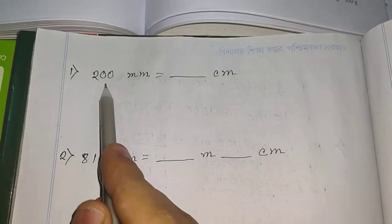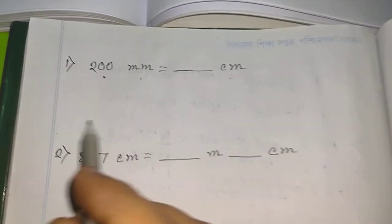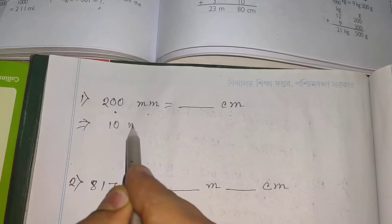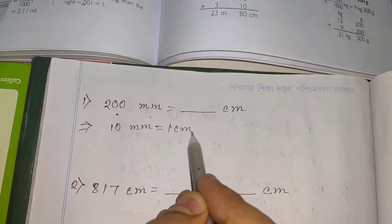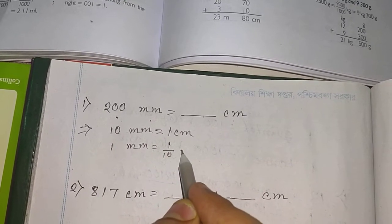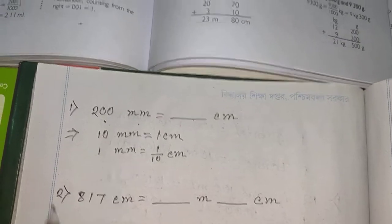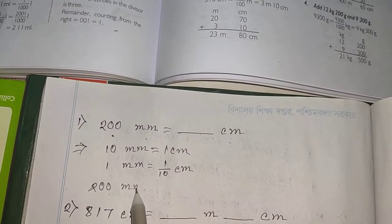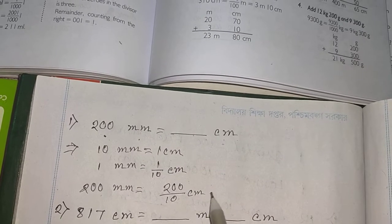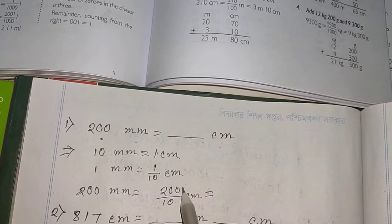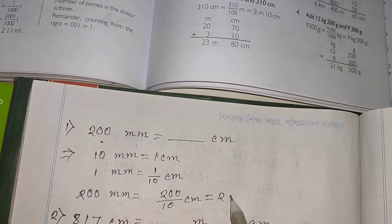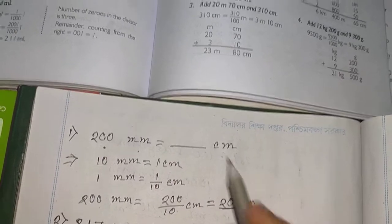Now convert the smaller unit to the bigger unit: convert 200 millimeters to centimeters. We know 10 millimeters equals 1 centimeter, so 1 millimeter equals 1/10 centimeter. Therefore 200 millimeters equals 200 divided by 10 centimeters. We remove one zero from the right, giving us 20 centimeters as the answer.